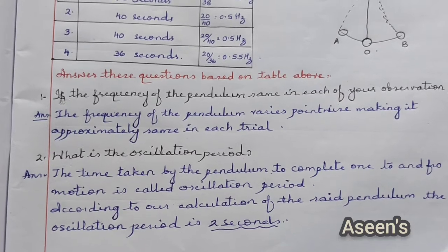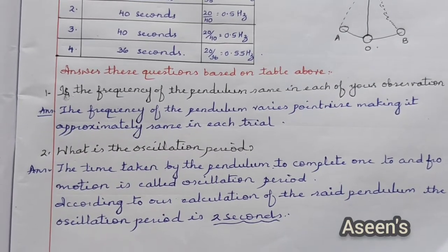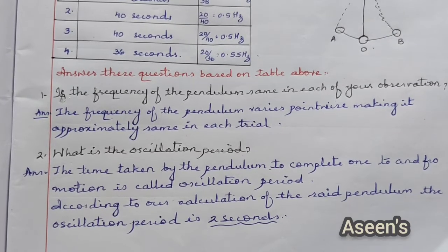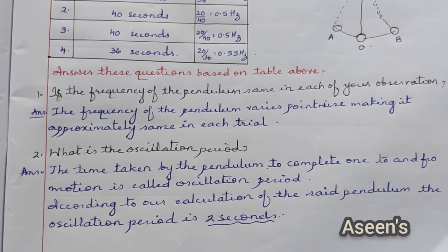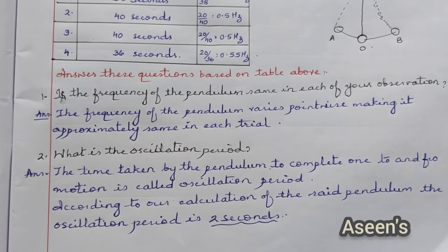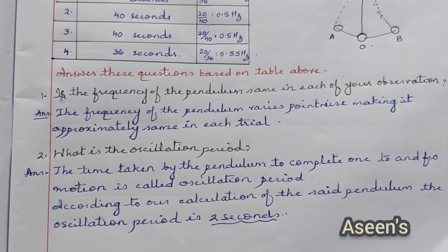Now that once you have filled the tabular column, two questions must be answered. The first one: is the frequency of the pendulum same in each of your observations? In my case, the frequency of the pendulum varies pointwise, making it approximately same in each trial.